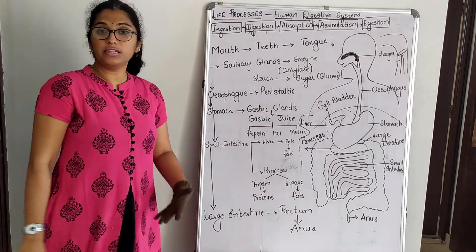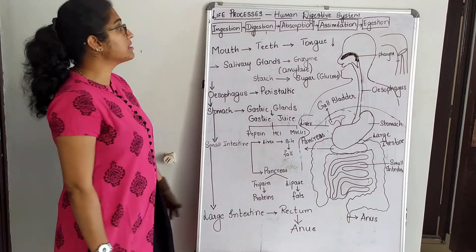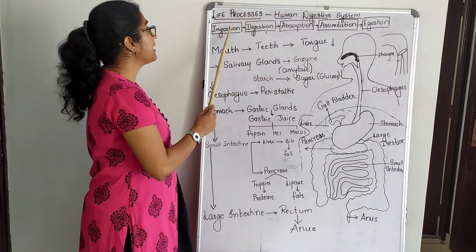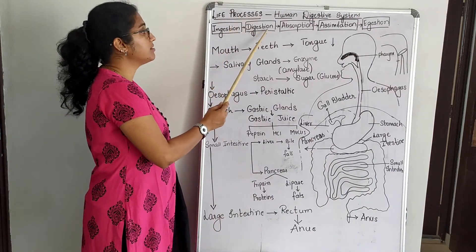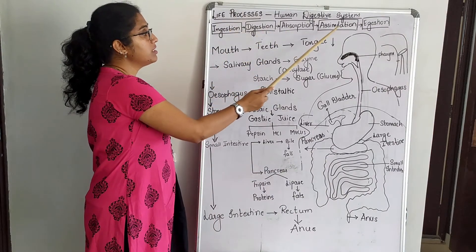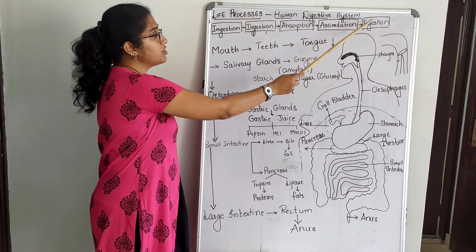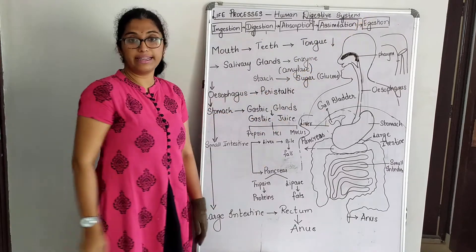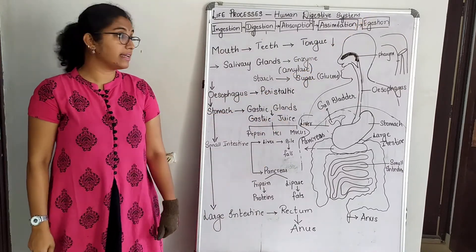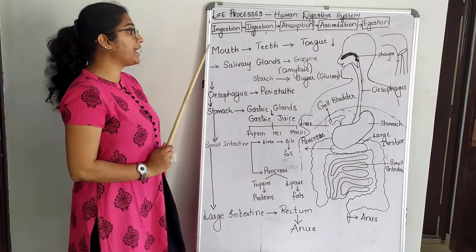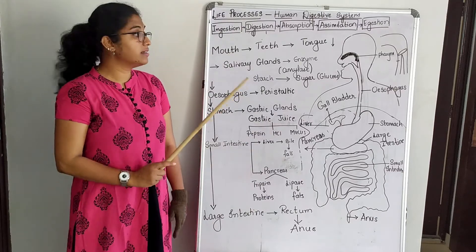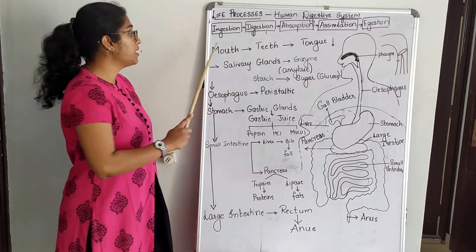Nutrition in human beings is carried out through various steps: ingestion, digestion, absorption, assimilation, and egestion. Now let us see how these steps are carried out through various organs and glands in the human digestive system.